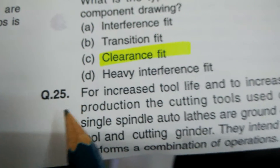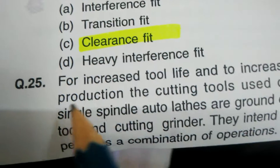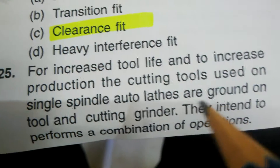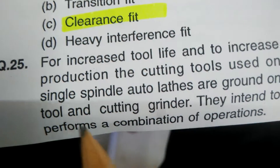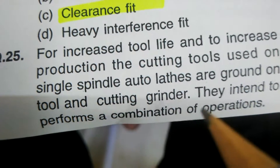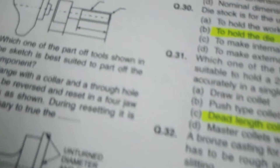Question number twenty-five. For increased tool life and to increase production, the cutting tool used on a single spindle auto lathe is ground on a tool and cutter grinder to perform a combination of operations. Based on the objective drawing as shown, option A is the correct answer for increasing the life of the tool.